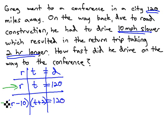So when we put these two rows together, we end up with this simultaneous product that rate times time equals 120, and rate minus 10 times time plus 2 also equals 120.